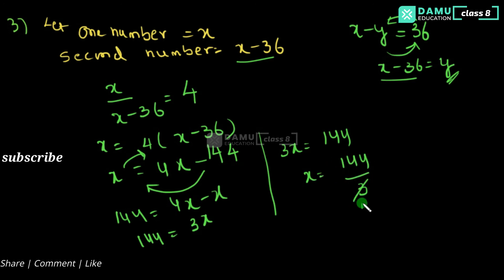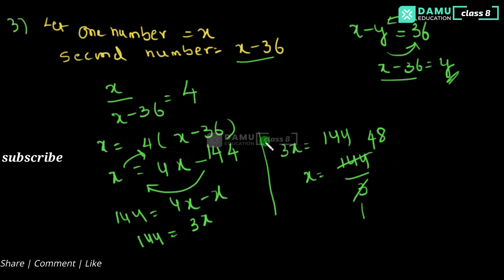So the answer is x equals 48. Now the other number is x minus 36, which is 48 minus 36.